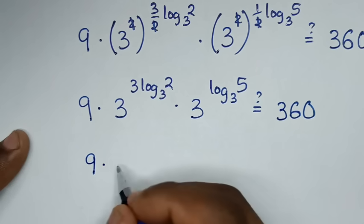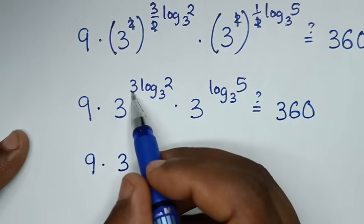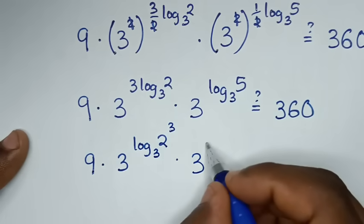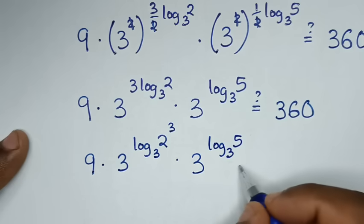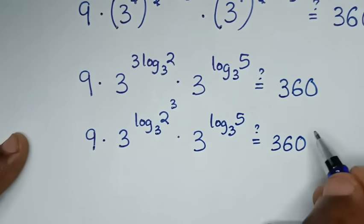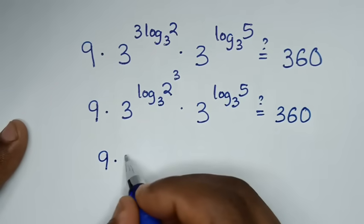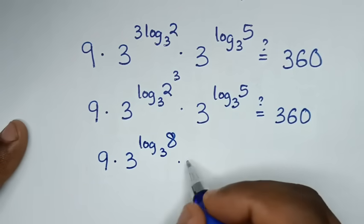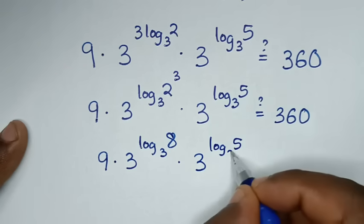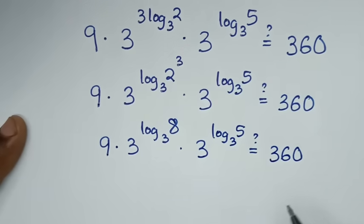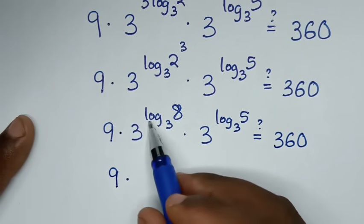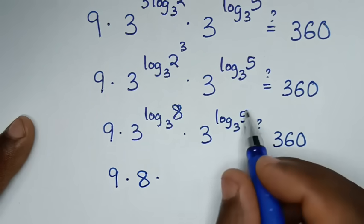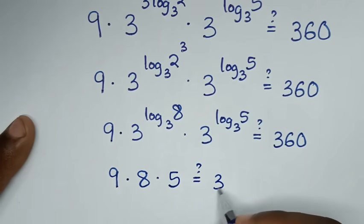Now into here, it will be 9 times — this power of 3 will move to the power — so it will be log of 2 power 3 base 3, times 3 power of log of 5 base 3. Is it equal to 360? So here 3 power of 3 is 27, and now here it will be 9 times 8 — 3 power of log of 5 base 3 is the same as 5 — then times 5 is it equal to 360.